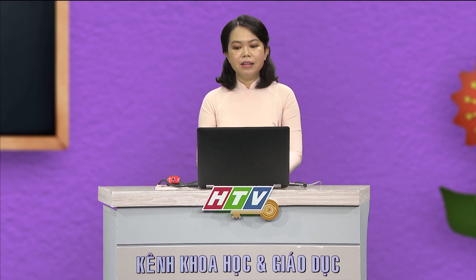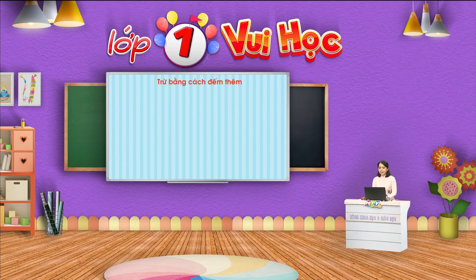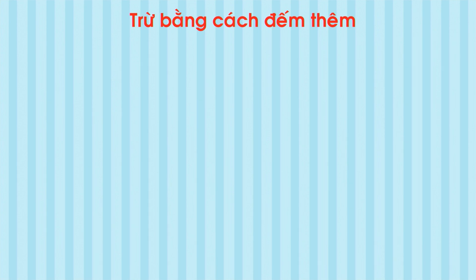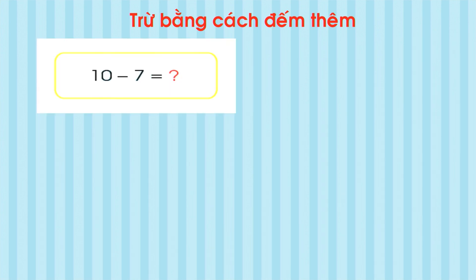Các em đã được học trừ bằng cách đếm bớt. Tiết học hôm nay, cô sẽ giới thiệu các em thêm một cách thực hiện phép trừ nữa. Đó là trừ bằng cách đếm thêm. Chúng ta sẽ thực hiện cách trừ này như thế nào? Bây giờ, cô mời các em chú ý nhé. Để thực hiện phép trừ 10 trừ 7 bằng cách đếm thêm, chúng ta thực hiện như sau.